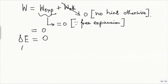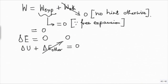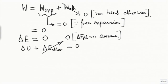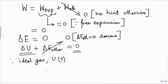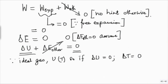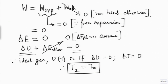Writing ΔE = ΔU + ΔE_other, and assuming the gas is stationary so ΔE_other = 0, we get ΔU = 0. Since it is an ideal gas, internal energy U is a function of temperature only. Therefore if ΔU = 0, then ΔT = 0, and the final temperature equals the initial temperature T₀.